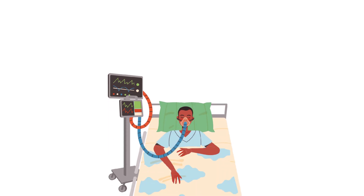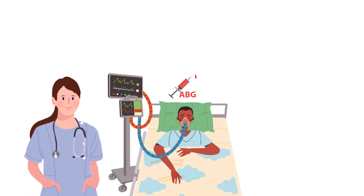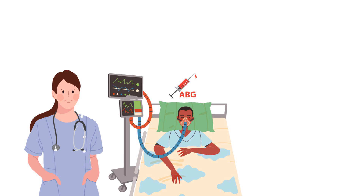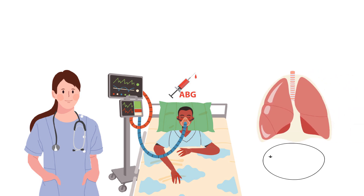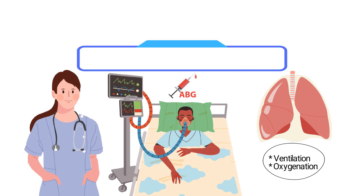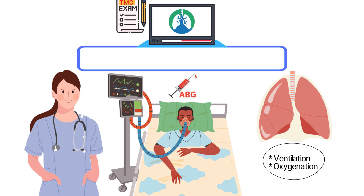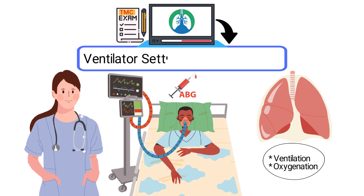When managing a patient on mechanical ventilation, it's crucial to carefully interpret their ABG results to guide your clinical decisions. These values provide insight into the patient's respiratory status, revealing whether ventilation or oxygenation needs adjustment. Keep watching because this video breaks down a practice question that will challenge your ability to analyze ABG results and make precise adjustments to the ventilator settings.